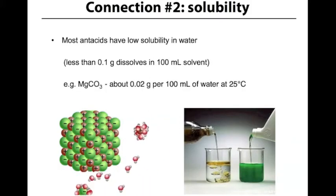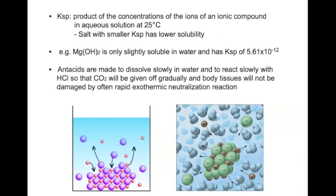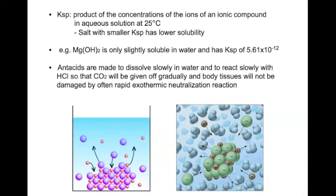For example, magnesium carbonate is soluble to the extent of about 0.02 grams per 100 milliliter of water at room temperature. Solubility product constant, KSP, can also be used to determine how soluble the salt is in solution. Salt with smaller KSP has lower solubility, and many antacids have lower KSP value. Magnesium hydroxide, for example, is only slightly soluble in water and has a KSP value of 5.61 times 10 to the power of negative 12, which is a very small number.